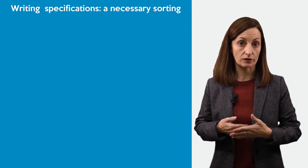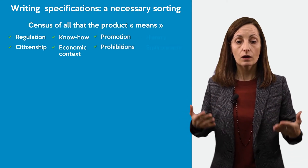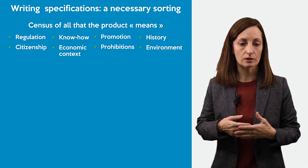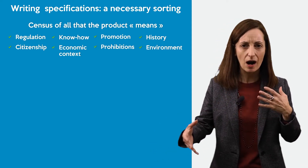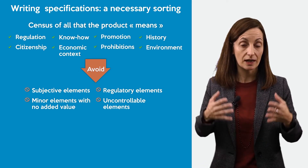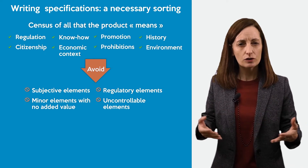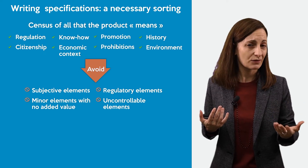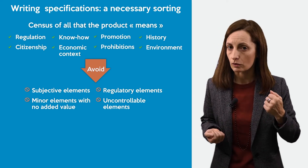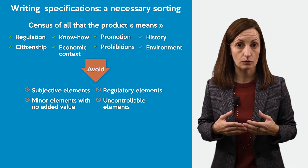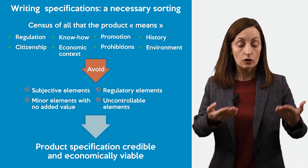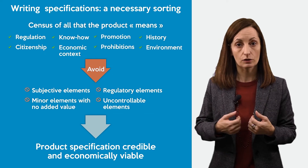Writing specifications requires a necessary sorting. You need a census of all elements that define what the product means — sorting between regulation, citizenship, prohibition, know-how, specificities, etc. But you need to avoid certain elements: avoid all subjective elements, like saying 'my product is the best,' because it means nothing. Avoid minor elements that give no added value to the product and specifications. Avoid what is not controllable — uncontrollable elements shall not be integrated inside the control plan. You also need to make a balance, because the control plan shall be economically feasible. The product specification shall be credible and the control plan shall be economically viable.